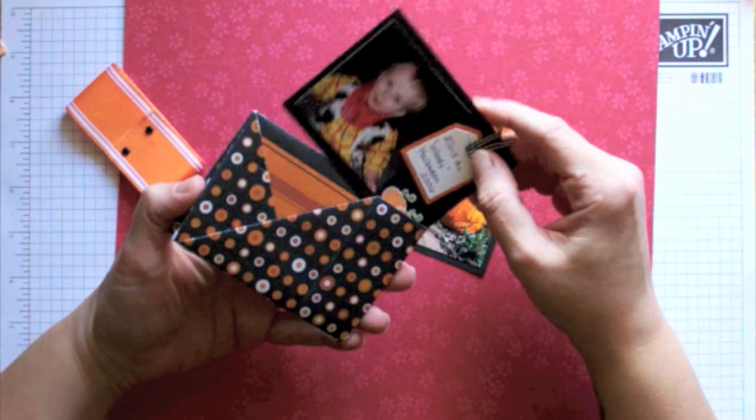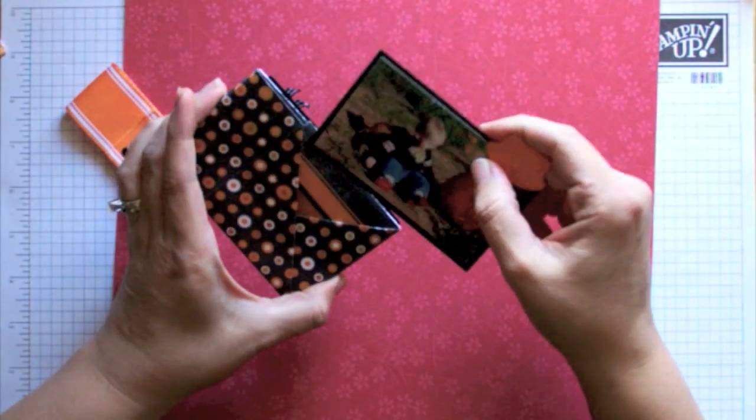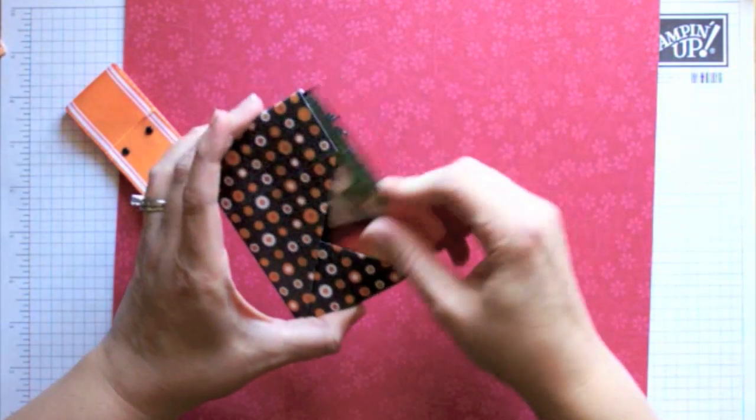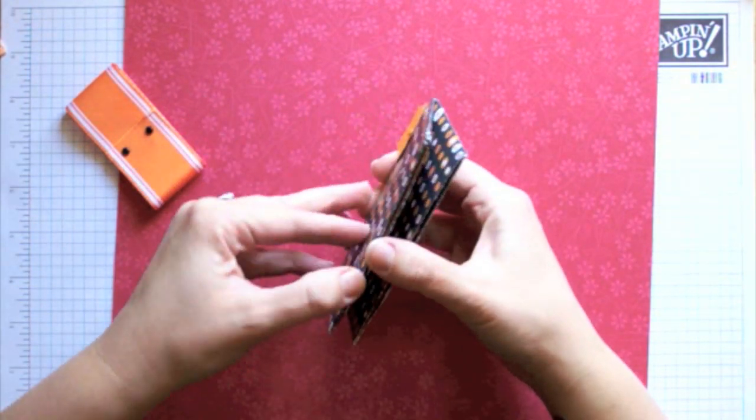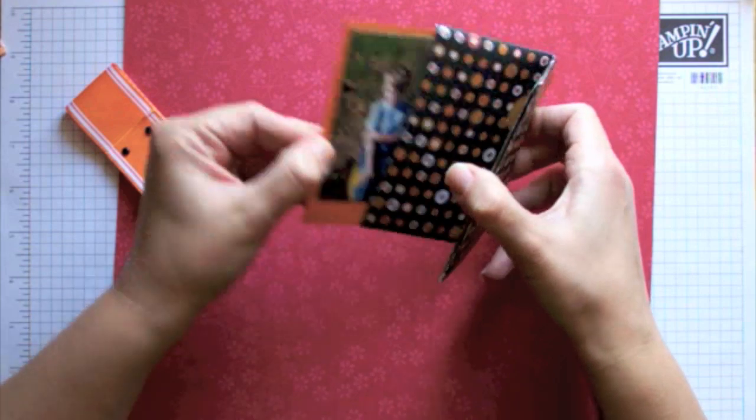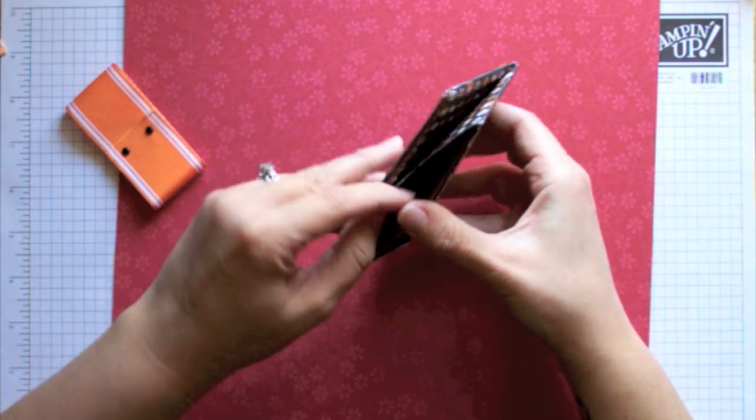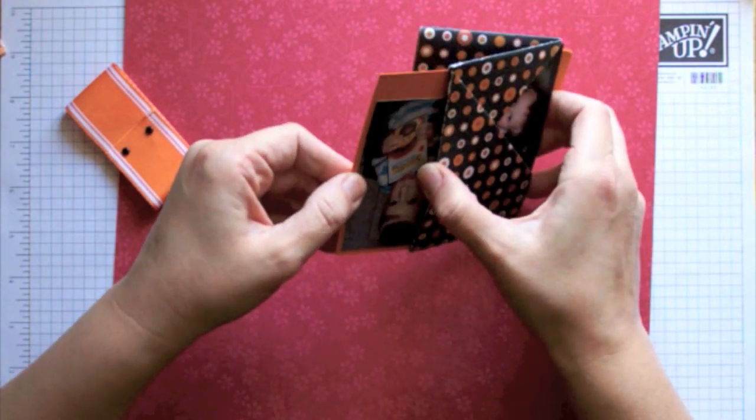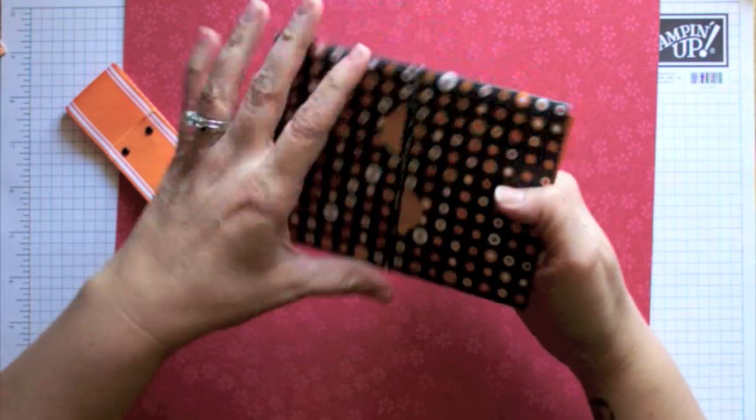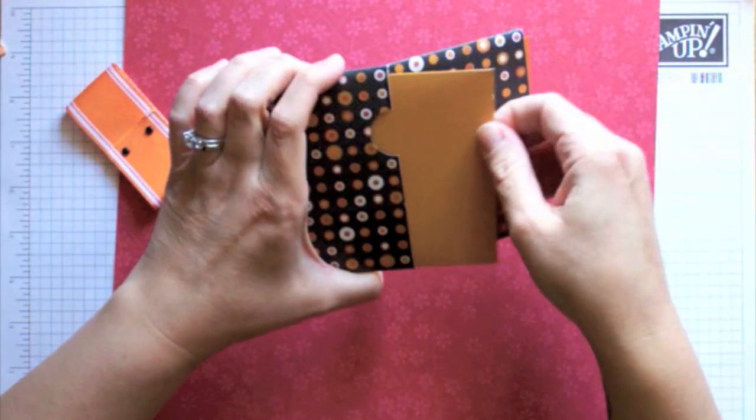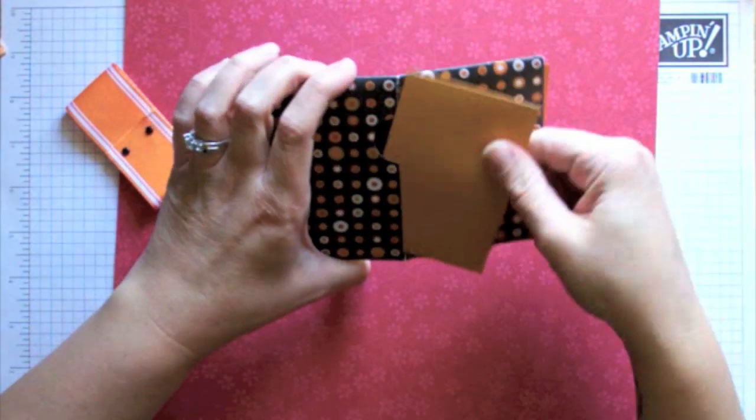Basically, when you fold it, it just makes this pocket and you put your pictures in it. And there's also pockets on the ends of it that you can put pictures in right here, just like that. And then when you open it up,